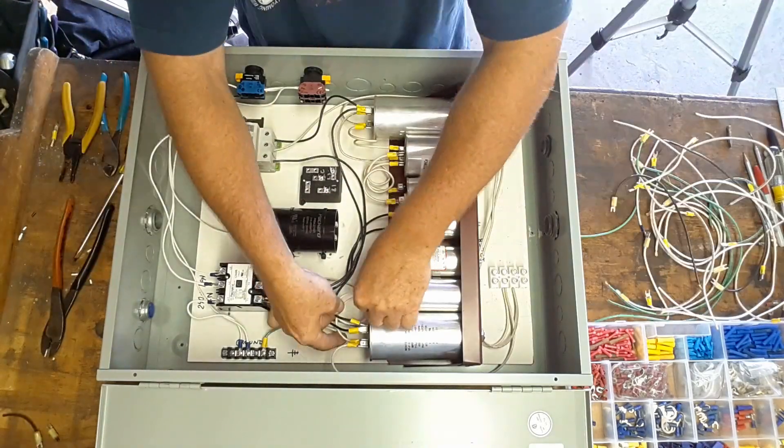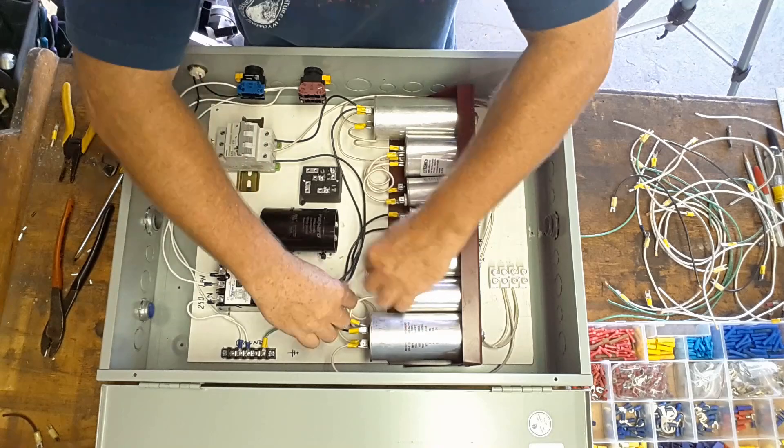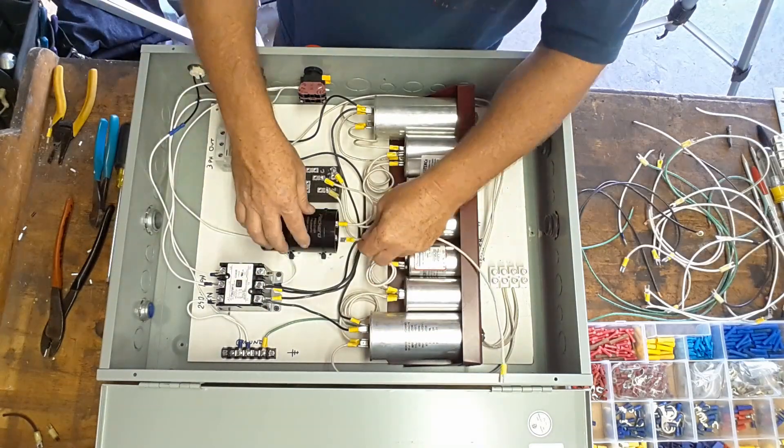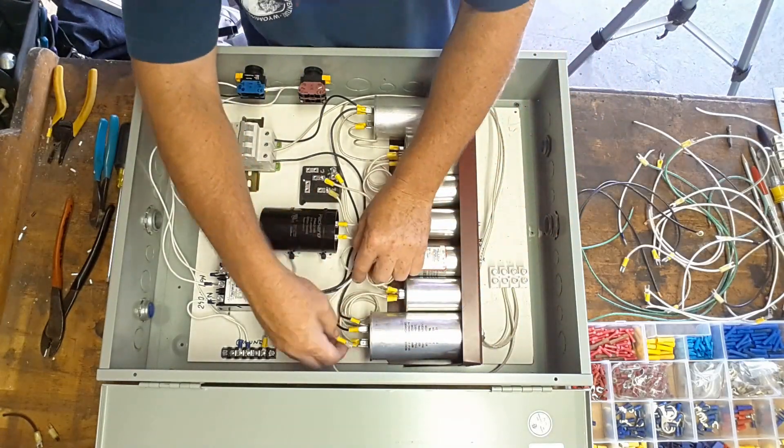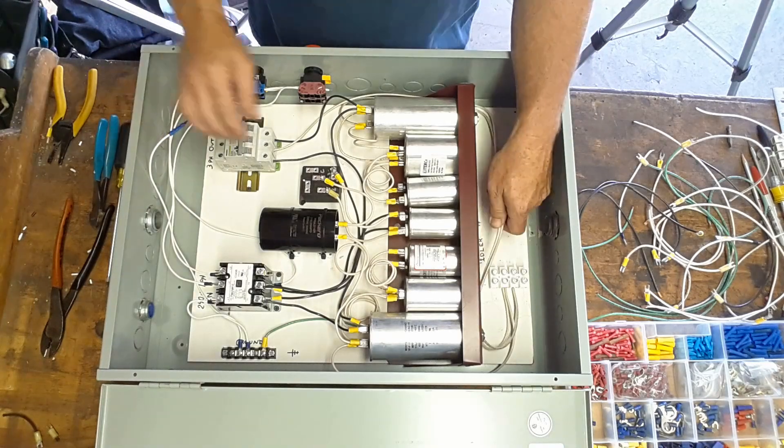The stack of wires off to the side there are ones that were used in the original layout. And I'm reusing those just to save on the crimp connectors so you'll see me pick one, measure it out, replace an end, etc.